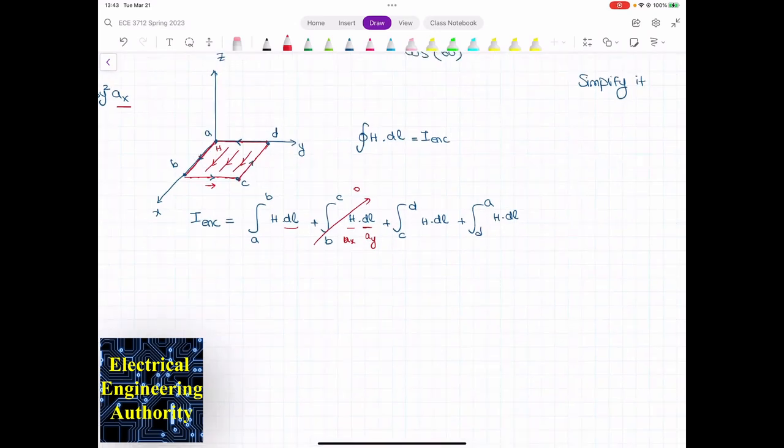But when I go from D to A, dL is in this direction, which is negative ay. So that is negative ay. Then I have ax, then this will be zero. So we're only left with these two integrals.